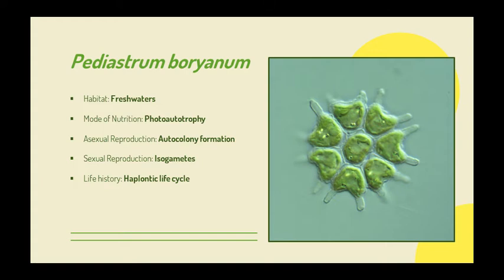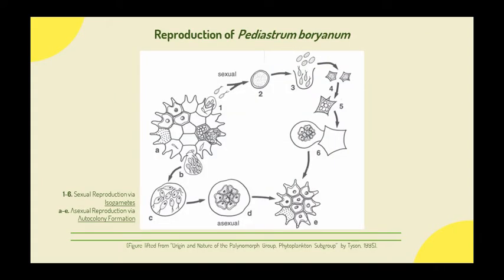They have a haplontic life cycle and thus undergoes zygotic meiosis. In asexual reproduction, each cell in the parent colony undergoes a series of nuclear divisions. The cytoplasm of the mother cell is then cleaved into uninucleate cells, which then become active biflagellate zoospores. The outer wall of the mother cell ruptures and the zoospores are extruded from the parent colony. However, these zoospores are retained within a vesicle. After a period of swarming within the vesicle, the zoospores aggregate in the same planar pattern that was present in the parental coenobium. Once the disc becomes stable, peripheral cells grow a pair of prongs and the vesicle disintegrates and dissolves, liberating the daughter colony and allowing it to grow and expand in size.